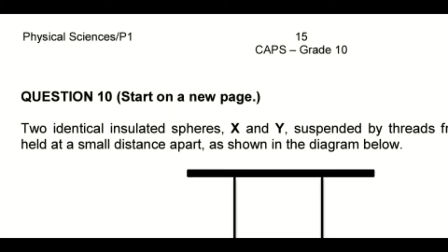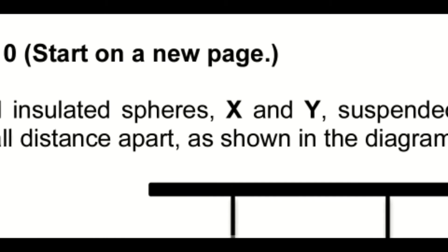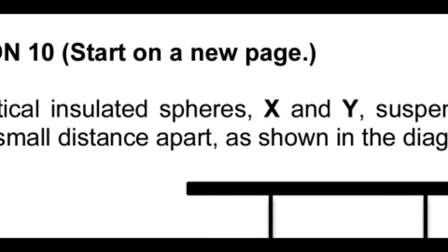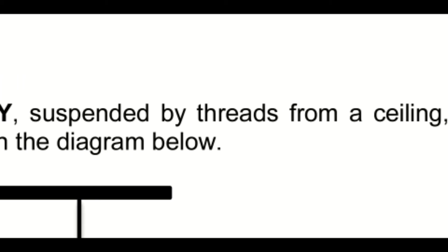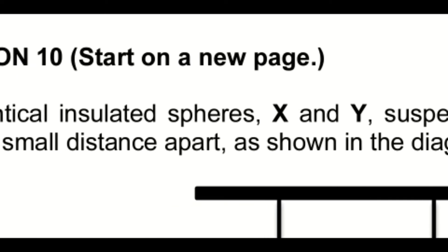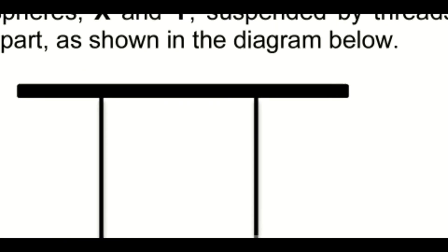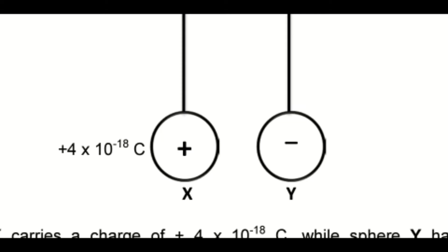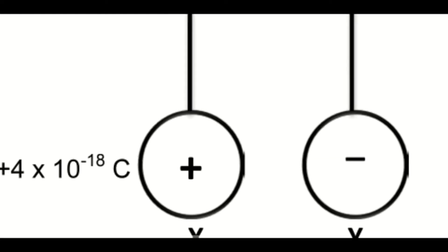This is a grade 10 physical sciences paper one question paper, and we are on question 10. Two identical insulated spheres X and Y, suspended by threads from a ceiling, are held at a small distance apart as shown in the diagram. You can see sphere X with a positive charge and sphere Y with a negative charge.